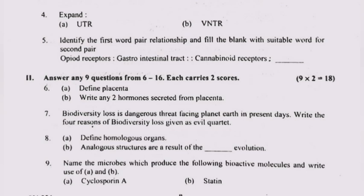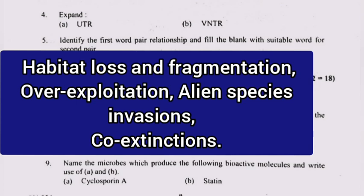Question 7: Biodiversity loss is a dangerous problem facing planet Earth in present days. Write the four reasons of biodiversity loss given as the evil quadrant. Answer: Habitat loss and fragmentation, overexploitation, alien species invasions, co-extinctions.